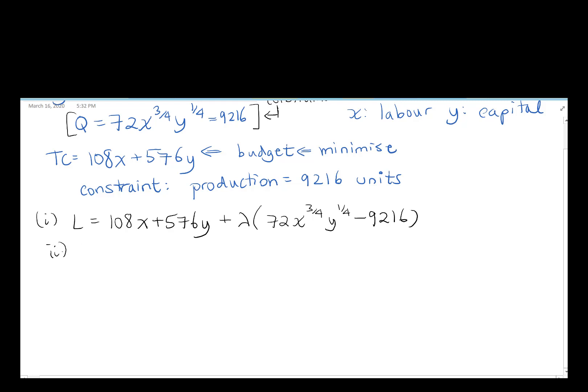Step two, take all of your derivatives. So Lx, Ly, and L_lambda. We have 108 plus lambda times 72 times 3/4, x^(-1/4), y comes along for the ride, the y^(1/4), minus 0 for our first derivative here. Now, 3/4 of 72, let's see what that gives us.